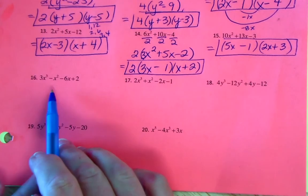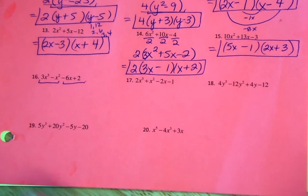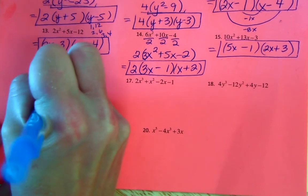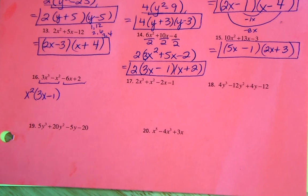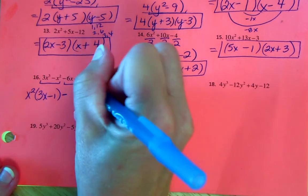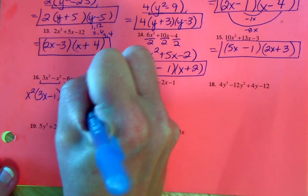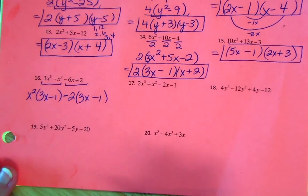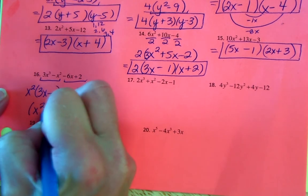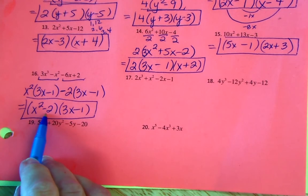Now let's move to factoring by grouping, since we have more than three terms. Group the first two and the second two. The GCF for the first group is x², giving (3x − 1). We should get (3x − 1) in our parentheses on the right side. If there's a negative sign splitting the two groups, the GCF for 2 and 6 is 2. Dividing by negative 2: positive 3x and minus 1. We put the two monomials in front in one binomial: (x² − 2)(3x − 1). This is not DOTS because 2 is not a perfect square.